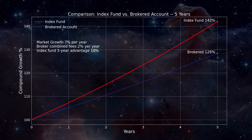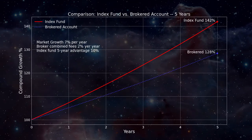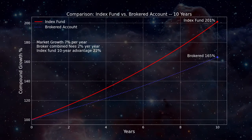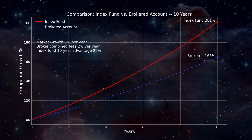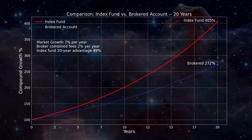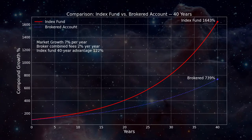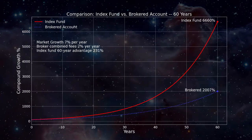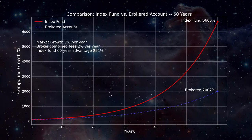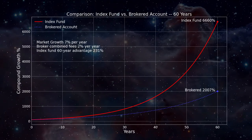In 5 years, the index fund pulls ahead to 11% — showing the amplifying effect of compound interest. In 10 years, the index fund is ahead by 22%. In 20 years, it's ahead by 49%. In 40 years, 123%. And in 60 years, the no-load index fund comes out ahead by 231%, more than twice the value of the brokered account.